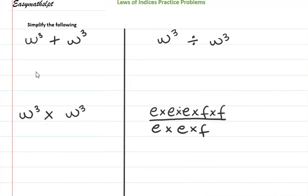Welcome back. In the first question it's asking us to simplify w cubed plus w cubed. In this case we're not using the laws of indices — all we're doing is collecting like terms. If you need help with collecting like terms you can watch my video on that. So we're adding two lots of w cubed, so our answer is 2w cubed.